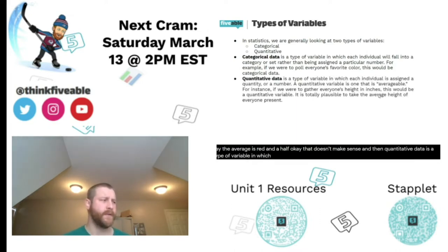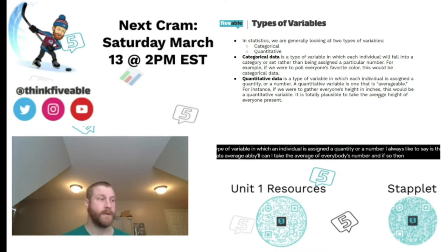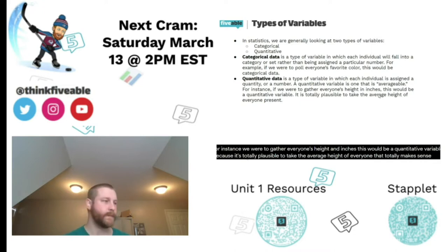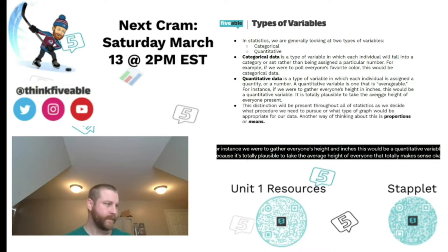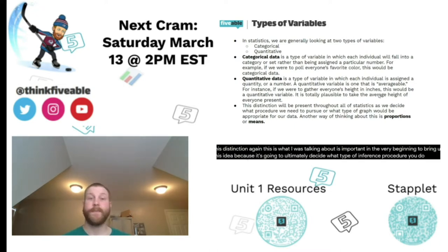Quantitative data is a type of variable in which an individual is assigned a quantity or a number. I always like to ask: is this data 'averageable' — can I take the average of everybody's number? If so, it's quantitative. For instance, if we gathered everyone's height in inches, that's quantitative because it's totally plausible to take the average height. This distinction is important from the very beginning because it determines what type of inference procedure you use and what type of graph is appropriate.